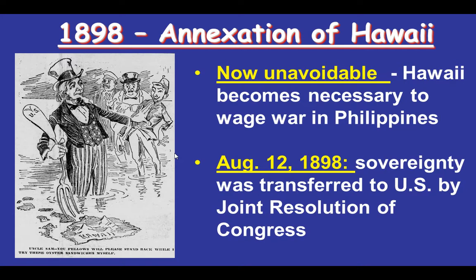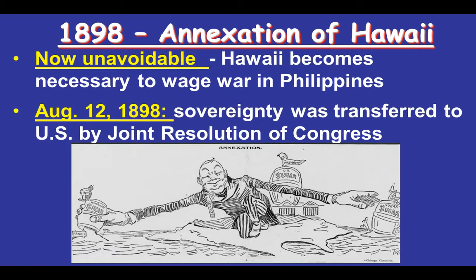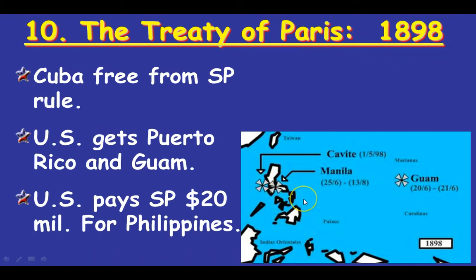A few months later, once war is declared, the question of annexing Hawaii becomes a reality. Hawaii is now necessary as a midpoint stop across the Pacific to wage war against the Philippines. This is what brings Hawaii into U.S. control and territory — sovereignty transferred by joint resolution of Congress. There are also big sugar and fruit plantations there, which helps grow the sugar economy and industry for the United States. There are a lot of economic benefits to this splendid little war.